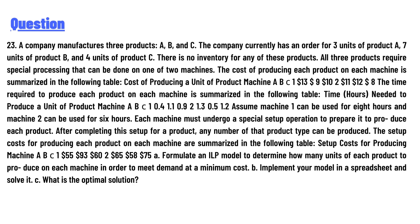The time required to produce each product on each machine is summarized in the following table. Time needed to produce a unit of product — Machine 1: A=0.4hrs, B=1.1hrs, C=0.9hrs; Machine 2: A=1.3hrs, B=0.5hrs, C=1.2hrs. Machine 1 can be used for eight hours and machine 2 can be used for six hours.